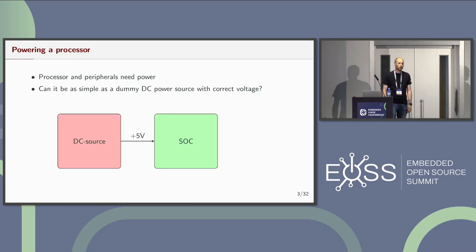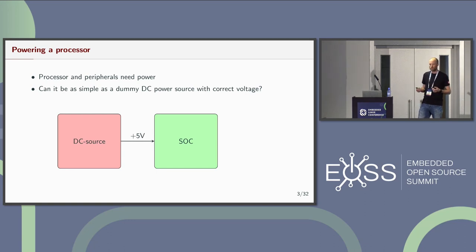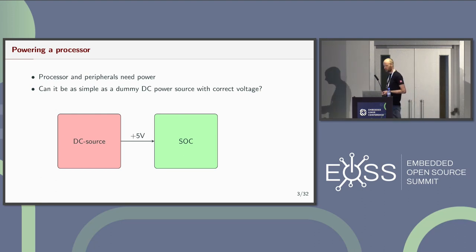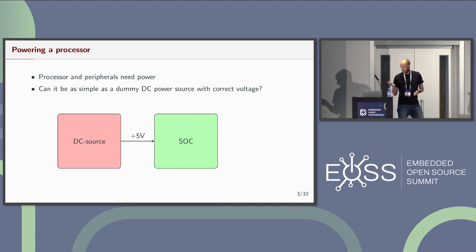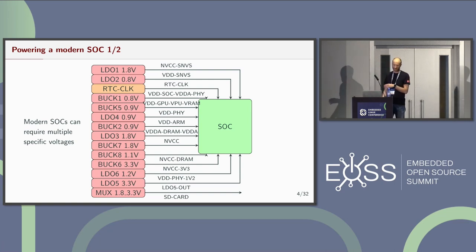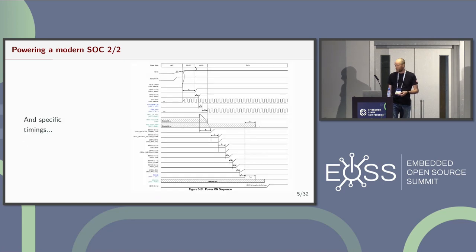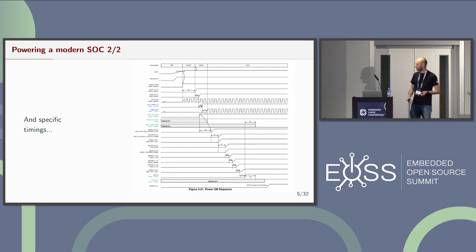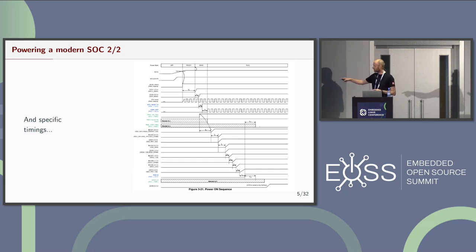When I tell people I'm doing power management drivers, people often think: where do you need power management drivers? You just plug in the cord and things work. But that's a simplistic picture, because real-world SoCs might look quite different. There are usually multiple power rails needed, with different voltages and different control requirements. There are specific timing requirements for startup and shutdown sequences — quite strict timing requirements.